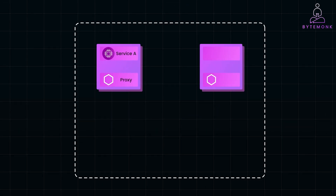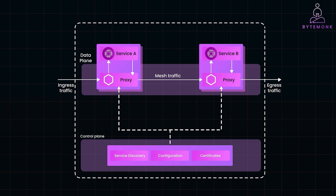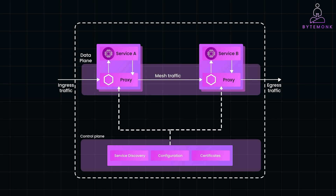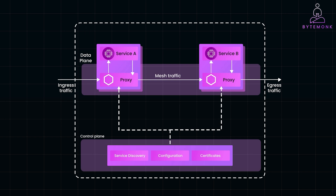Imagine two services — Service A and Service B — in a service mesh, each with its own sidecar proxy. Service A sends a request to Service B. The request from Service A goes first to its own sidecar proxy, which checks the routing rules, applies security policies, and then forwards the request to Service B's sidecar. Service B's sidecar intercepts the request, checks for any security rules like authentication, and then passes the request to Service B. The response from Service B follows the same path back through both sidecars. With a service mesh, you don't need to worry about networking or security code within your services — the sidecar manages all the complexities and the service mesh controller handles their coordination.